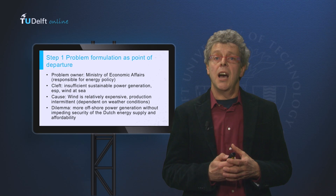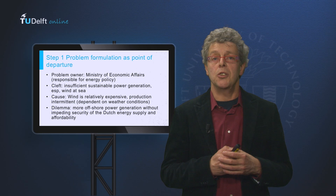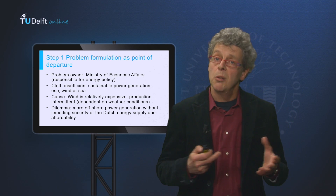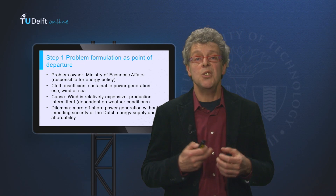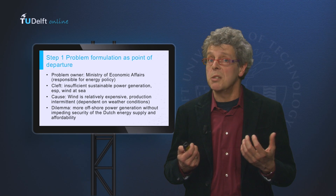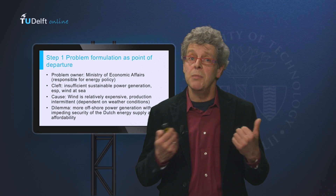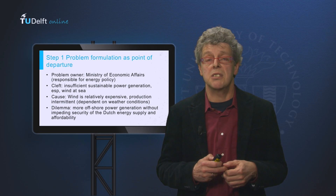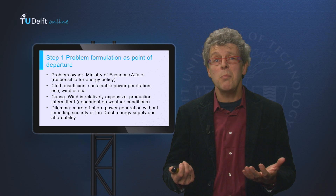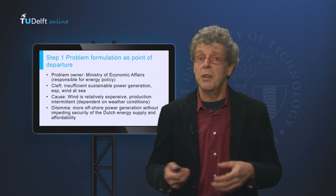In our first step, the problem owner is the Ministry of Economic Affairs, as they are responsible for the national energy policy in the Netherlands. The problem is that there is insufficient capacity installed at sea, and we won't make the target. What causes the problem? Generating wind energy is relatively expensive, and the production is intermittent, dependent on weather conditions. So the dilemma is: Economic Affairs wants more offshore power, but without impeding the security of Dutch energy supply and affordability.